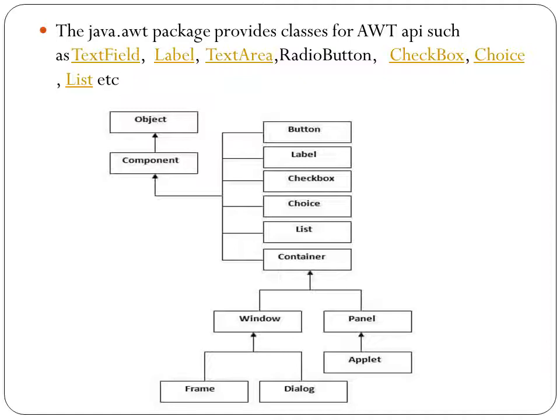This is the class hierarchy we already familiarized in the first session of AWT. In order to use AWT, we have to import the java.awt package, which provides classes for various components like text field, label, text area, radio button, etc. At the top of this hierarchy is Object, then comes the Component class. All control classes are subclasses of Component, and Container is also a subclass of Component. Containers have several subclasses like Window, Panel, Applet, Frame, etc.